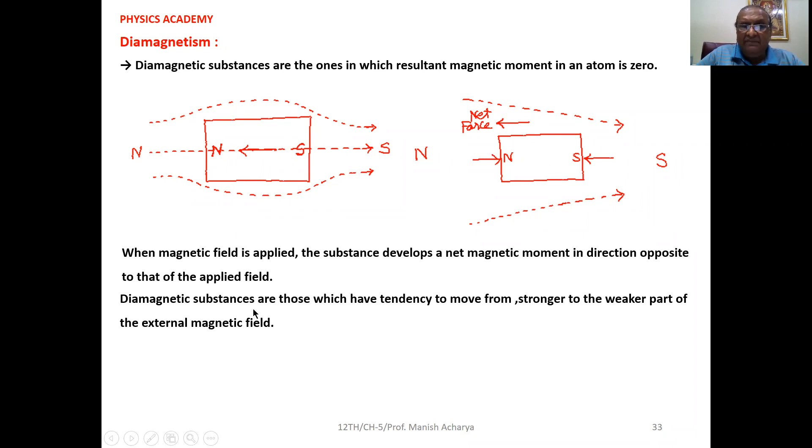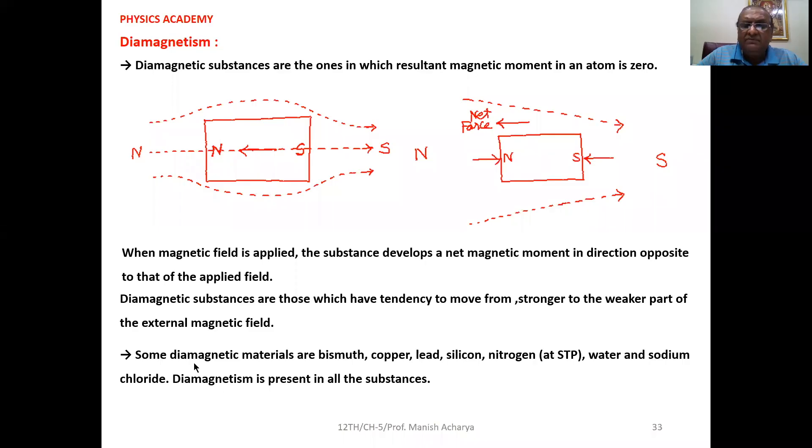Diamagnetic substances are those which have tendency to move from stronger to the weaker part of the external magnetic field. Clear to all of you? Now, some diamagnetic materials.